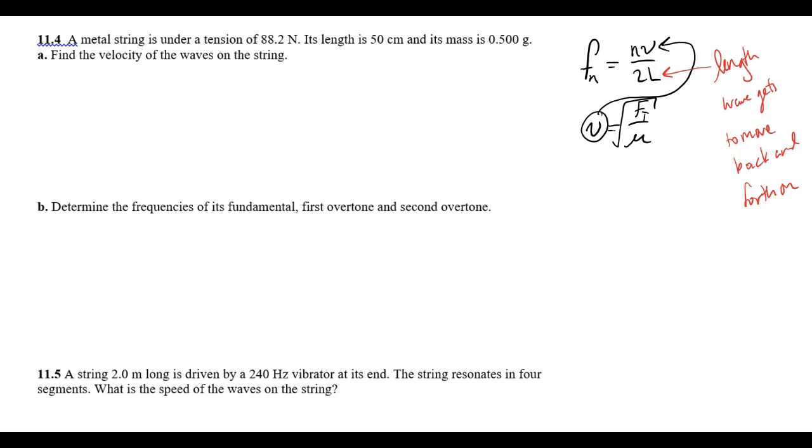Okay, so let's look at some of these problems. This is in your packet, after the standing waves part. It says a metal string is under a tension of 88.2 newtons. So f sub t is 88.2 newtons. The length is 50 centimeters and its mass is 0.5 grams.